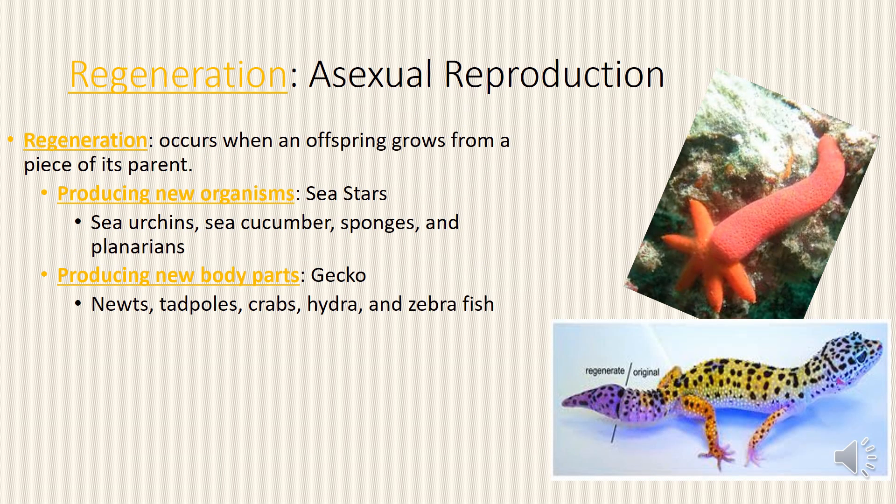We also have regeneration as a form of asexual reproduction. It occurs when an offspring grows from a piece of its parent, producing new organisms. Examples include sea urchins, sea cucumbers, sponges, and planarians.